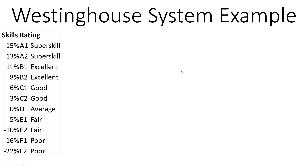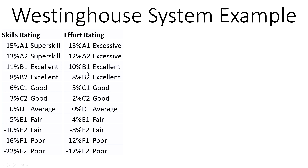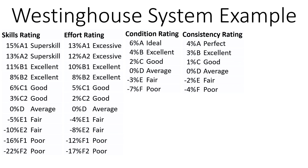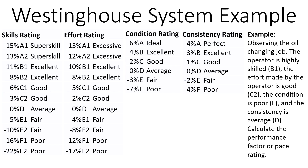One parameter is the skills rating — the skill level of the worker — and there is a table with guidelines to determine that. The second is the human effort someone is putting into the job, which you can check in a table. The third is the working condition, and the fourth is the consistency rating.